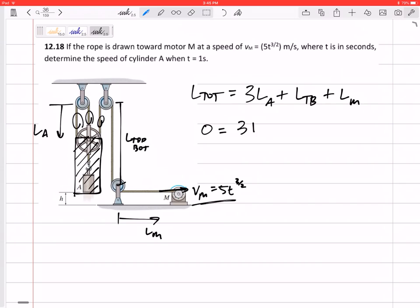All right, what about this length top to bottom? You probably already saw this - this one was constant, so its derivative is zero, or I could just neglect it. So this would be V_M. All right, so there's my equation: 0 equals 3V_A plus V_M.